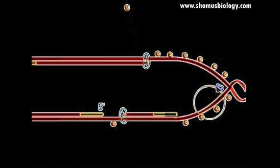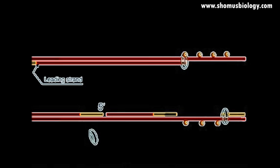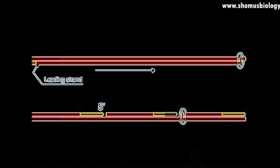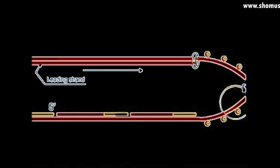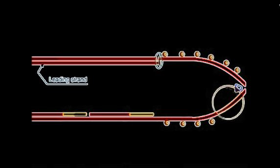One strand called the leading strand elongates continuously in the direction of the widening replication bubble. The DNA polymerase on the opposite strand travels in the opposite direction. Therefore, primase must make additional RNA primers for the strand as the replication bubble widens. DNA polymerase 3 adds nucleotides to the new primer.